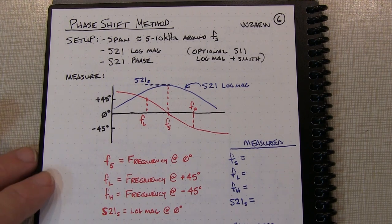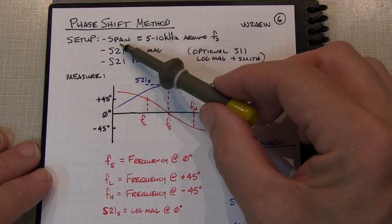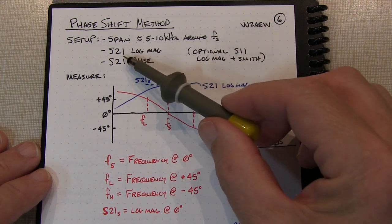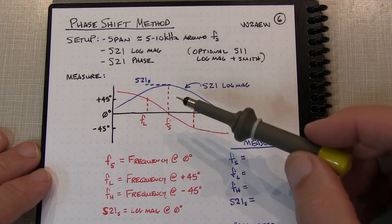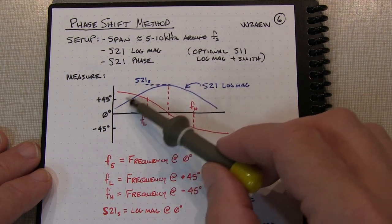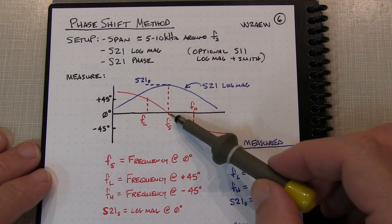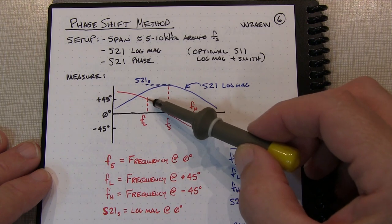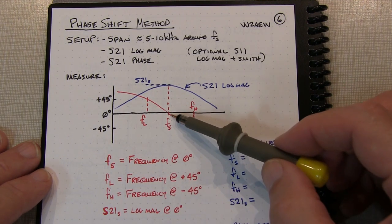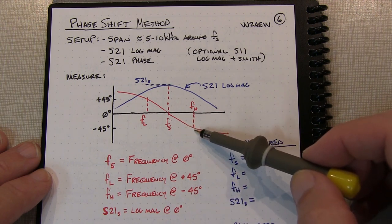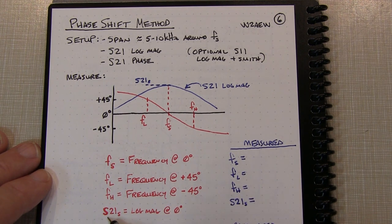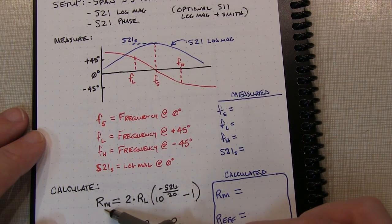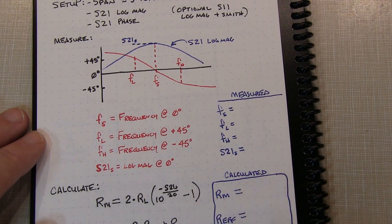The next three methods use the nanoVNA. The first is the phase shift method, where we set up a 5 to 10 kHz span around the series resonant frequency and look at S21 log magnitude and S21 phase. We find the series resonant frequency at the zero-degree phase point, then move the marker to the plus 45-degree phase shift point and record that frequency FL, and to the minus 45-degree point and record FH. We'll carry over the motional resistance calculation from our previous results.